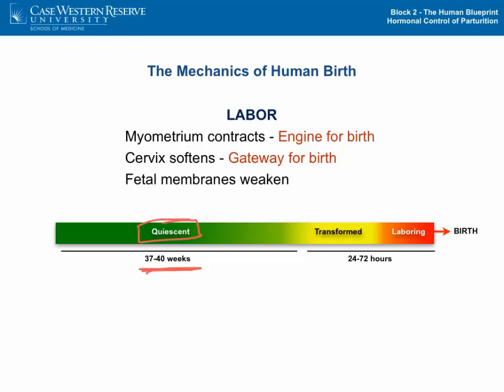At some point in pregnancy, the uterus transforms such that the muscle of the uterus begins to acquire a contractile phenotype, whereby it can contract forcefully and rhythmically to become the engine for birth.